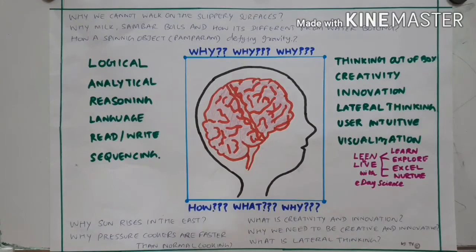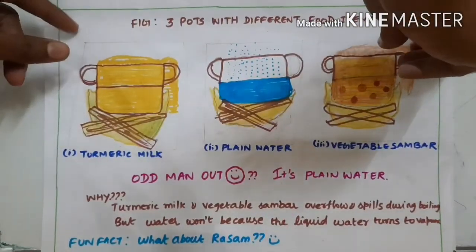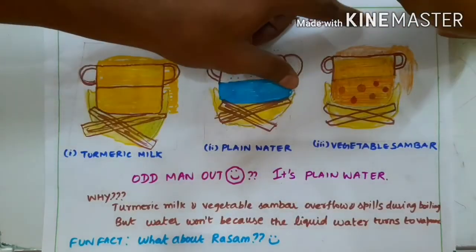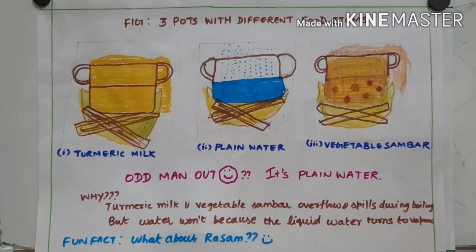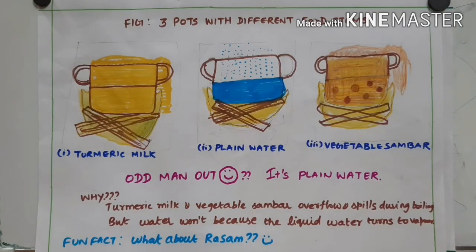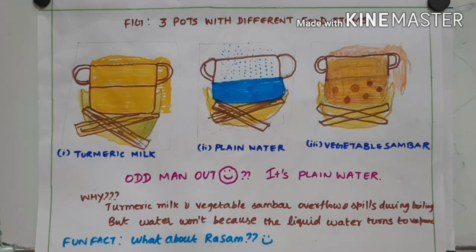Let me bring the drawing. Sorry friends for missing clarity in the drawing. My dad wants me to do freestyle drawing as it increases creativity. I shall show some pictures at the end so that you may get some interest. In the drawing, I colored yellow for milk, hence I named it turmeric milk.